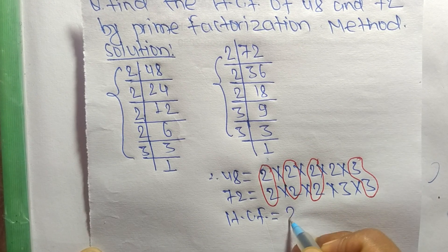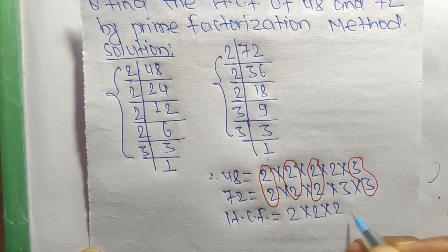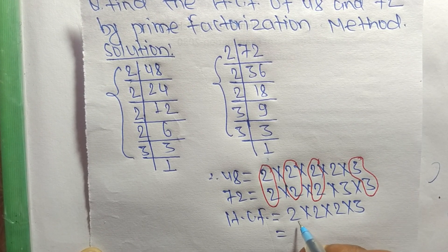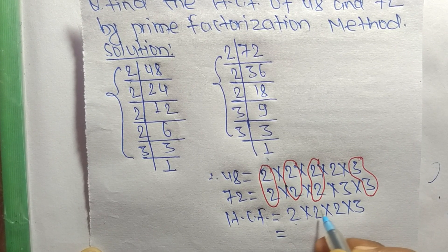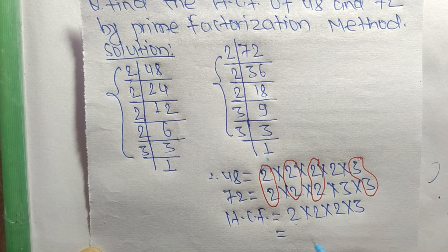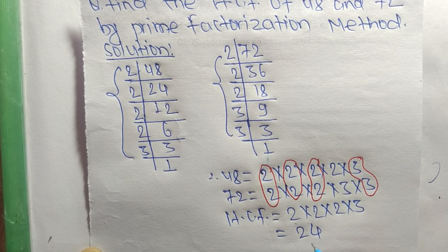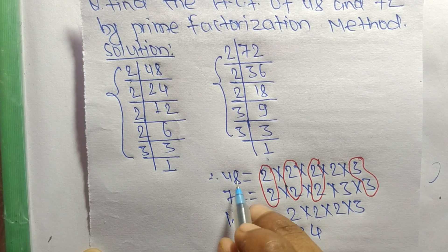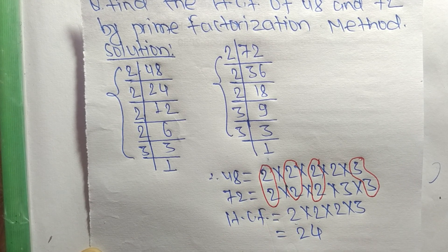So its HCF is equal to the product of common factors which are 2, 2, 2 and 3. So 2 times 2 equals 4, 4 times 2 equals 8, and 8 times 3 equals 24. So 24 is the HCF of 48 and 72.